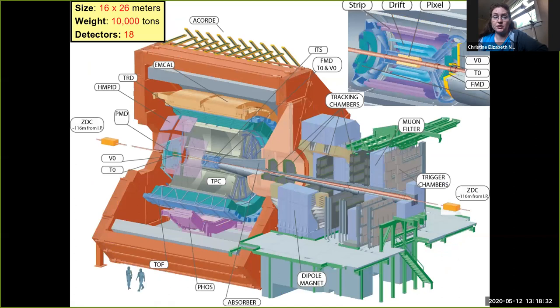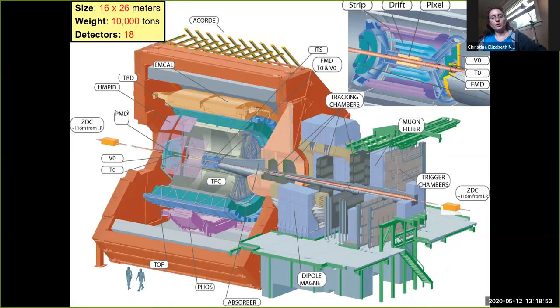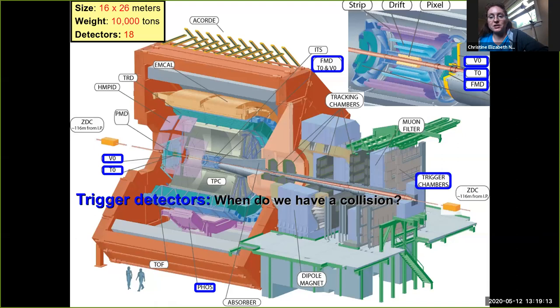I'm going to focus on the ALICE detector, which is still currently where most of my research is focused, but the principle is the same. You can think about the main purpose of these detectors as primarily acting as a camera taking pictures of the particles coming out from the collision. You have collisions happening typically about a thousand times a second, so you can't tell your detector when to start recording. One class of detectors are trigger detectors that tell you when you have a collision and when you should start recording data.